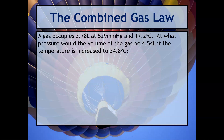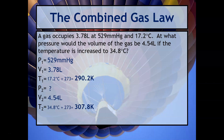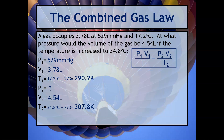Here's an example. A gas occupies 3.78 liters at 529 millimeters of mercury and 7.2 degrees Celsius. At what pressure would the volume of the gas be 4.54 liters if the temperature is increased to 34.8 degrees Celsius? I'll list out all the variables and extract the information. Our temperatures are in Kelvin, both volume units are matching, and our answer pressure unit will match the given pressure unit. Since all three variables are present, we use P1 times V1 over T1 equals P2 times V2 over T2.